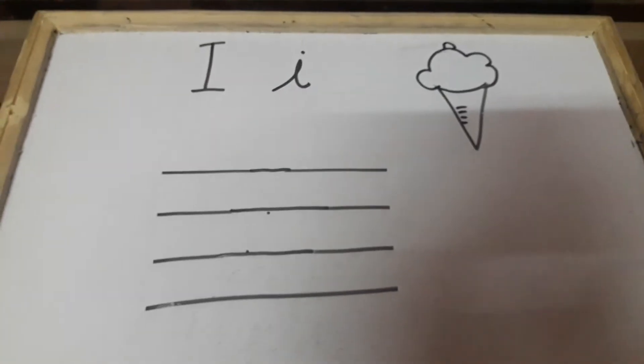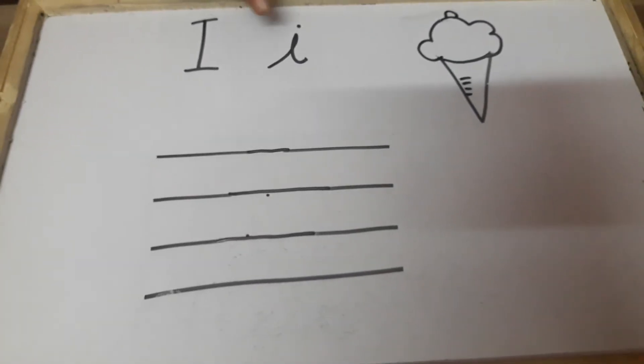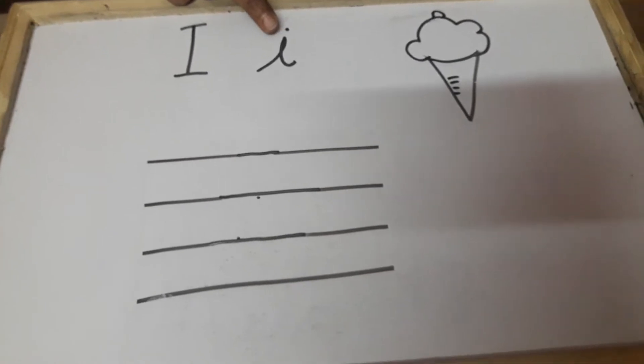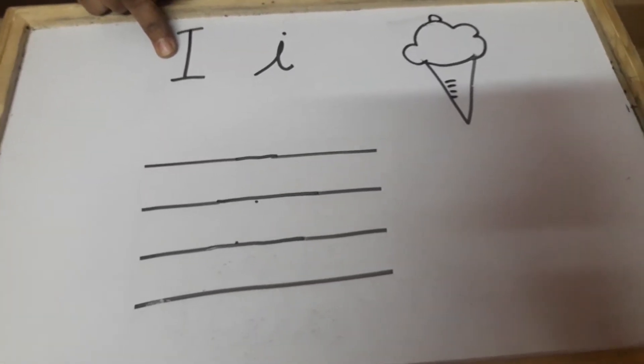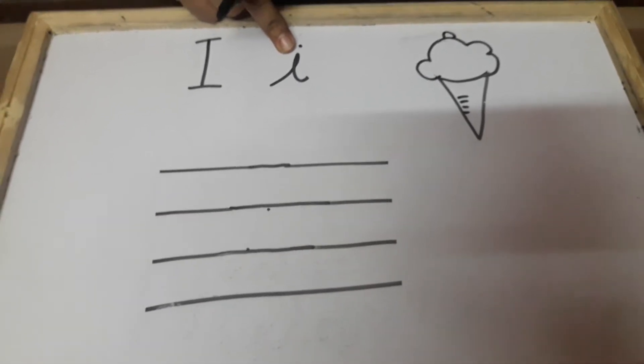Good morning kids. Today, our new letter is letter I. Small cursive letter I. This is capital letter I. This is small letter I.